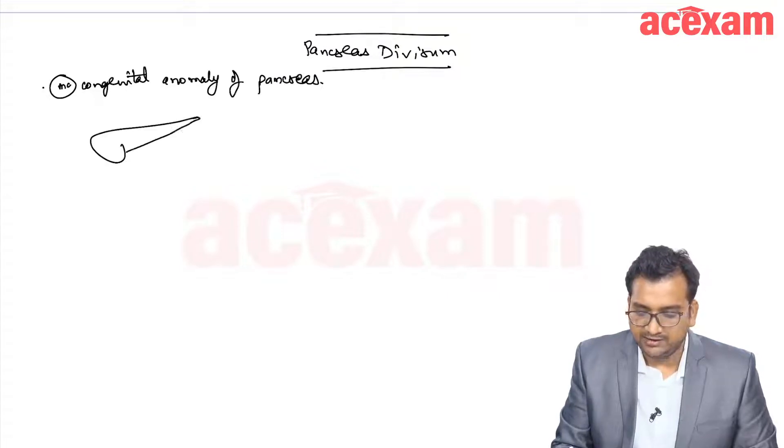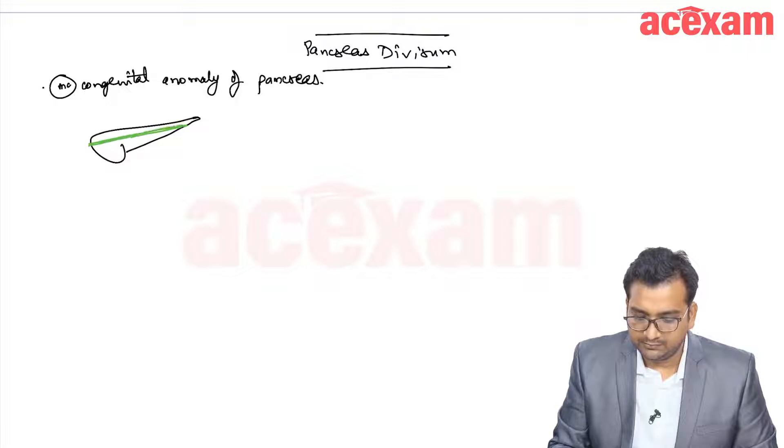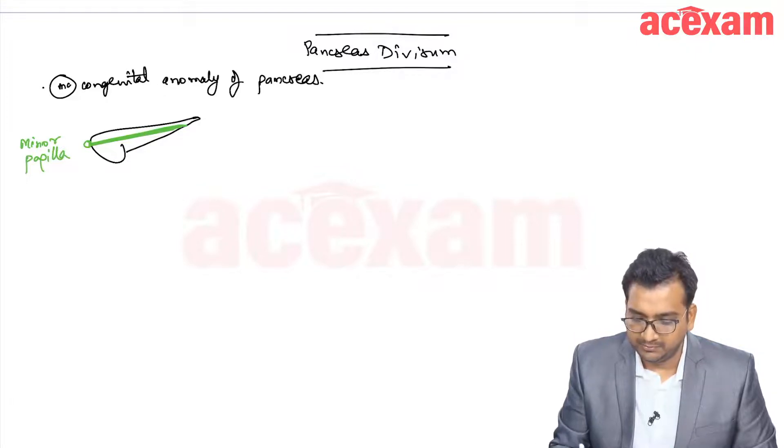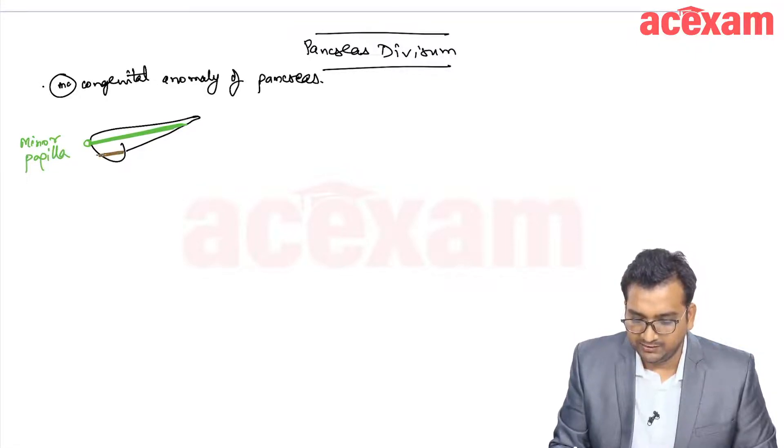There is a divided drainage. The dorsal duct drains into the minor papilla and the ventral duct drains into the major papilla, but there is no communication between them.